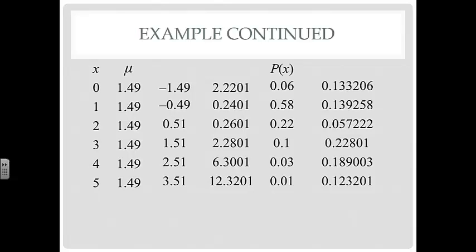We have our column of squaring the X minus mu. Then we have our P of X values. And then we have the product of the P of X and the fourth column. We get all of those values. And so, then we just add them up. We add up that far right column and we get 0.8699. And so that is the variance.